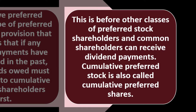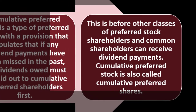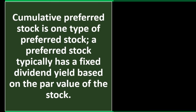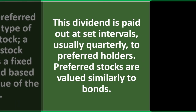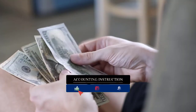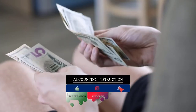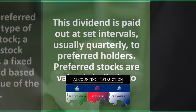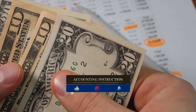Cumulative preferred stock is also called cumulative preferred shares. A preferred stock typically has a fixed dividend yield based on the par value of the stock. This dividend is paid out at set intervals — usually quarterly — to preferred shareholders. Preferred stocks are valued similarly to bonds, in that you have a somewhat fixed payment. It is even more predictable than dividends to common stockholders, making it similar in format to interest payments on a bond.